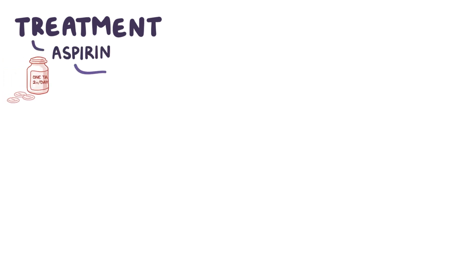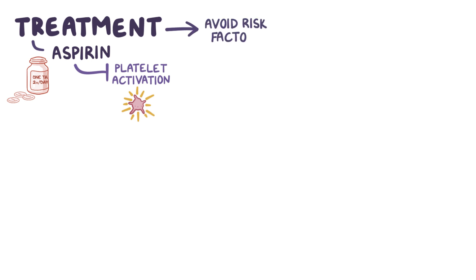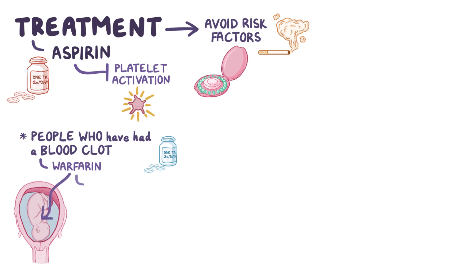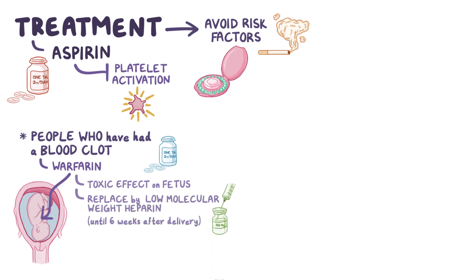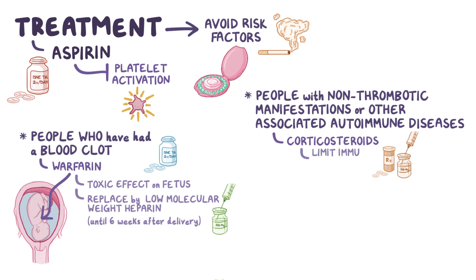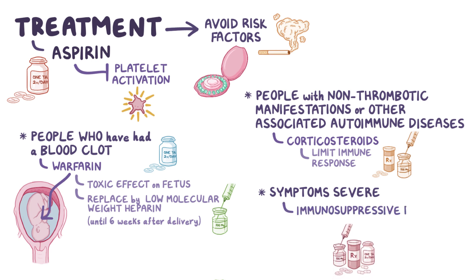Treatment of antiphospholipid syndrome is aimed at preventing thrombosis with aspirin to inhibit platelet activation, and avoiding risk factors like smoking and oral contraceptives. People that have a blood clot should also take warfarin as oral anticoagulant therapy. During pregnancy, warfarin can cross the placenta and have a toxic effect on the fetus, so it must be replaced by low molecular weight heparin up until 6 weeks after delivery. In people with non-thrombotic manifestations or other associated autoimmune diseases, corticosteroids might be used to help limit the immune response, and if symptoms are really severe, certain immunosuppressive drugs might be used.